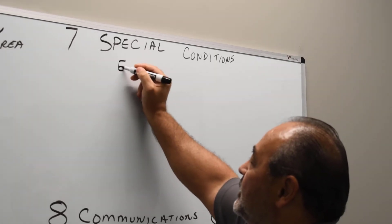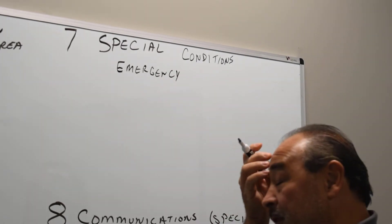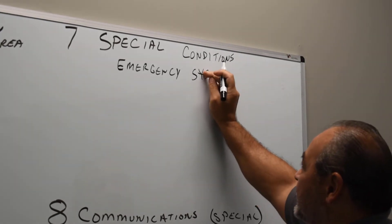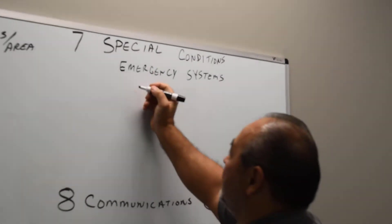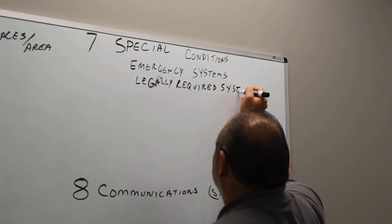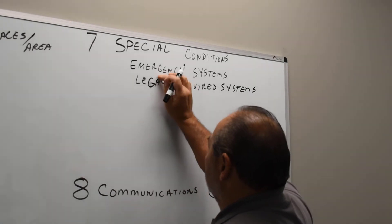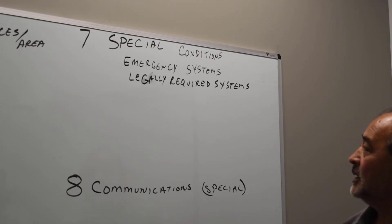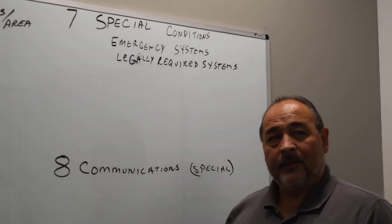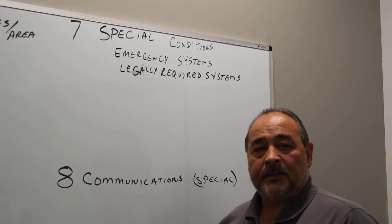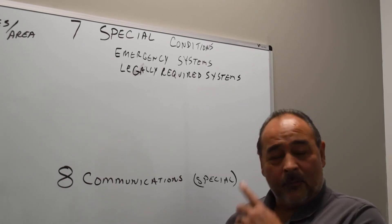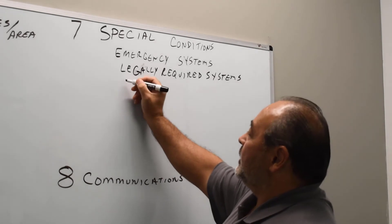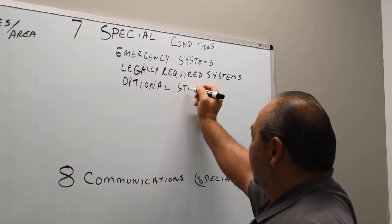We get into emergency systems. Now I want you to write systems there, not equipment. Emergency systems, that's the wiring of an emergency system. Then we got legally required systems. And again, that's very specialized. That would be like for a burglar alarm where they call the police, a fire alarm where they call the fire department, or like our 911 systems. Legally required. We don't want those first responders to not have power. So legally required systems are in there.